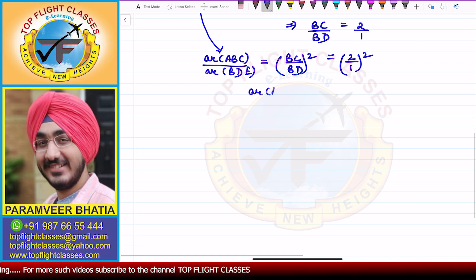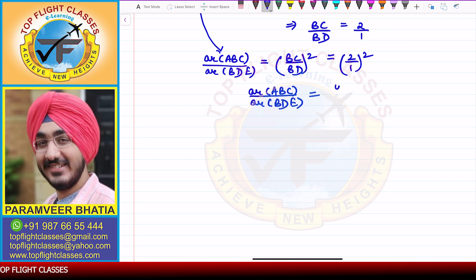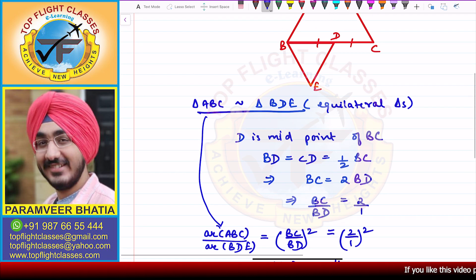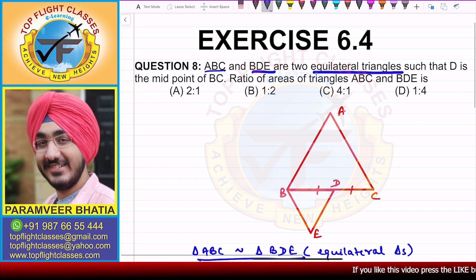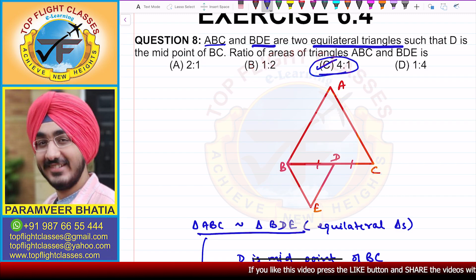The area of triangle ABC divided by the area of triangle BDE equals 2 squared over 1 squared, which is 4 to 1. Looking at the options, this corresponds to option C, which is the required answer.